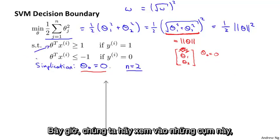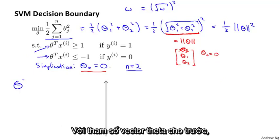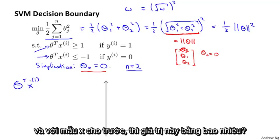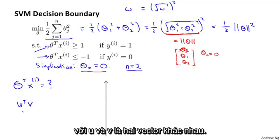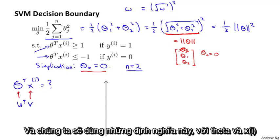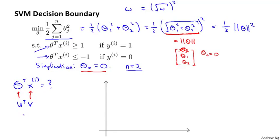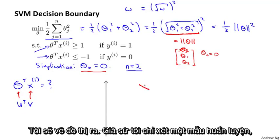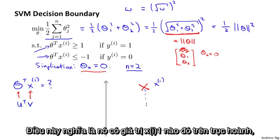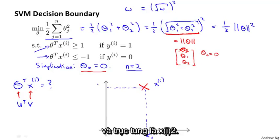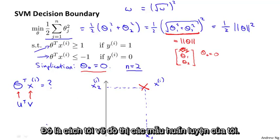Now I'd like to look at these terms theta transpose x and understand better what they're doing. Given parameters theta and an example x, what is theta transpose x equal to? We figured out what u transpose v looks like for different vectors u and v, and we're going to take those definitions with theta and x_i playing the roles of u and v. Let's say I look at just a single training example — a positive example plotted at some location x_i.